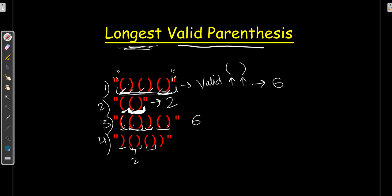In the fourth expression, we start with a closing brace, then open and close — that's two — then two more, and then another closing brace. When that last close brace looks for its matching open brace, it finds a closed brace instead, so it's not valid. The longest valid parenthesis here is four. Basically, we only count parentheses that are properly paired.